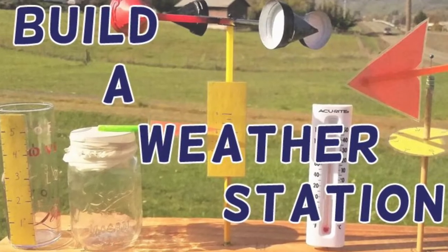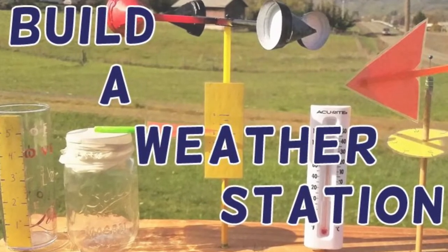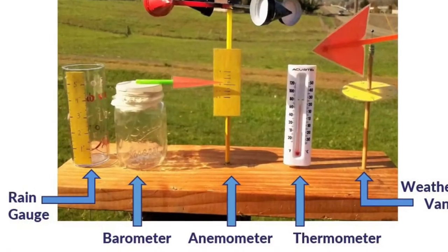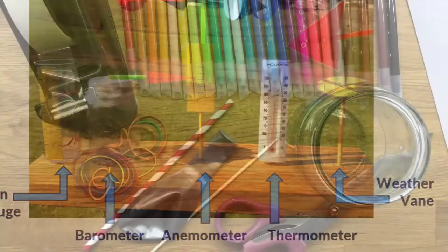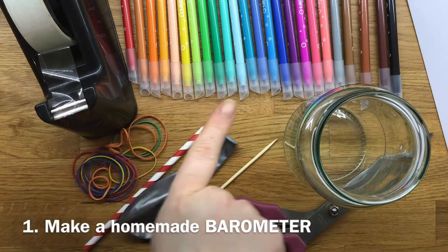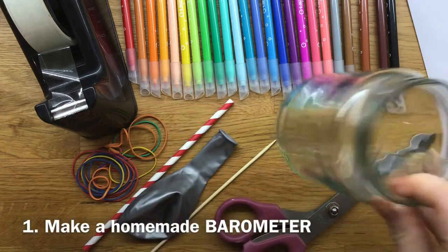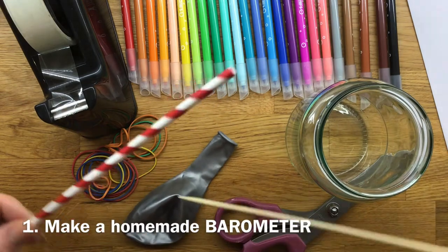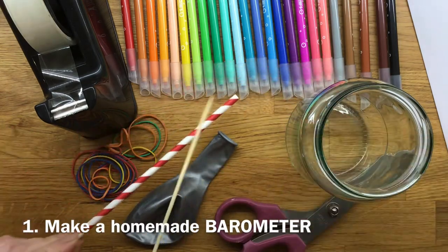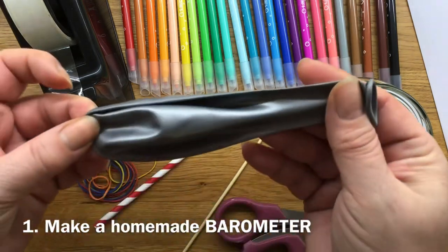Let's get started. First of all we're going to make a barometer, so you just need to gather some equipment. To make a barometer you're going to need sellotape, coloured pens, a jam jar, either a straw or a skewer, whatever you can find at home, and a balloon.